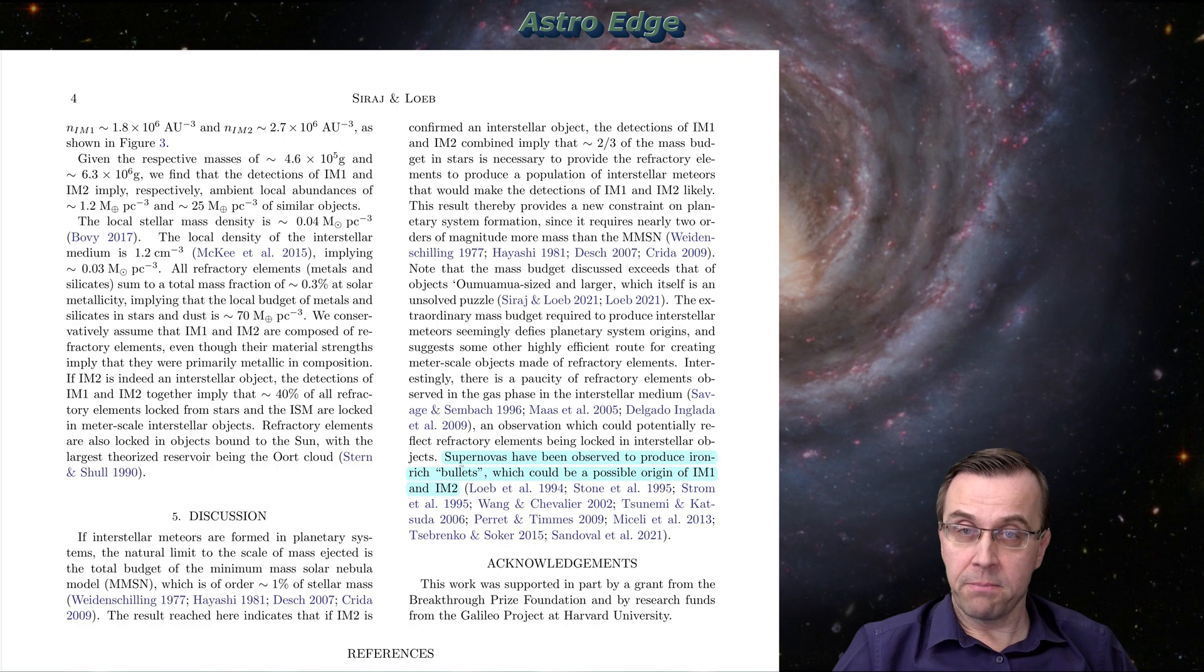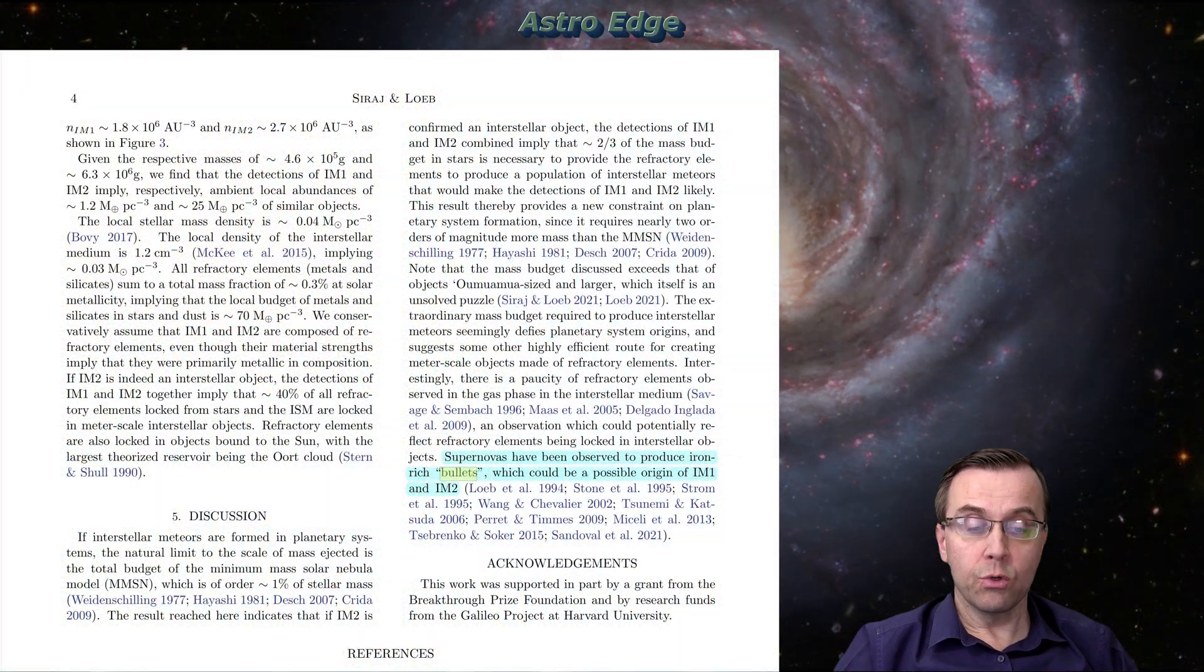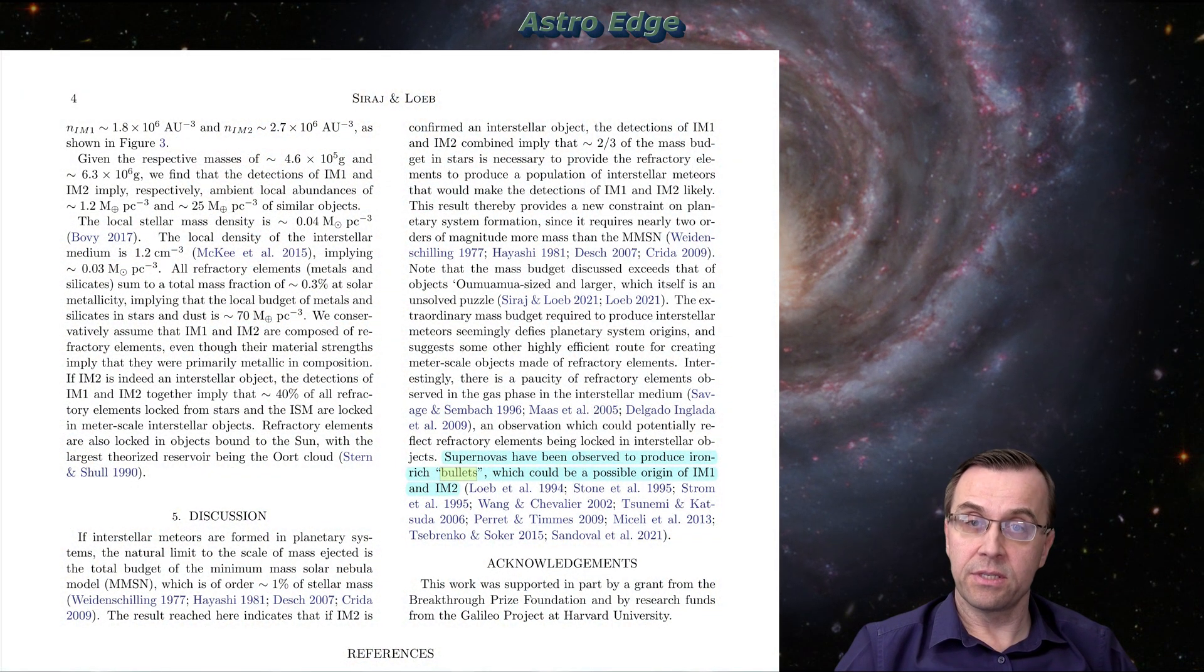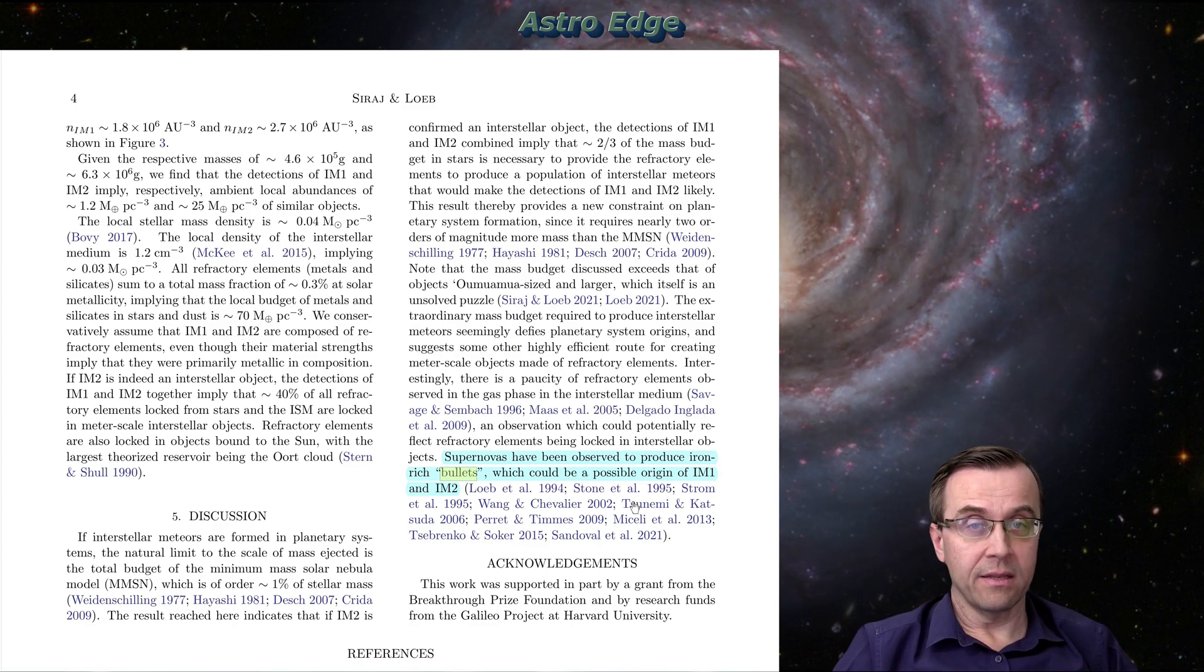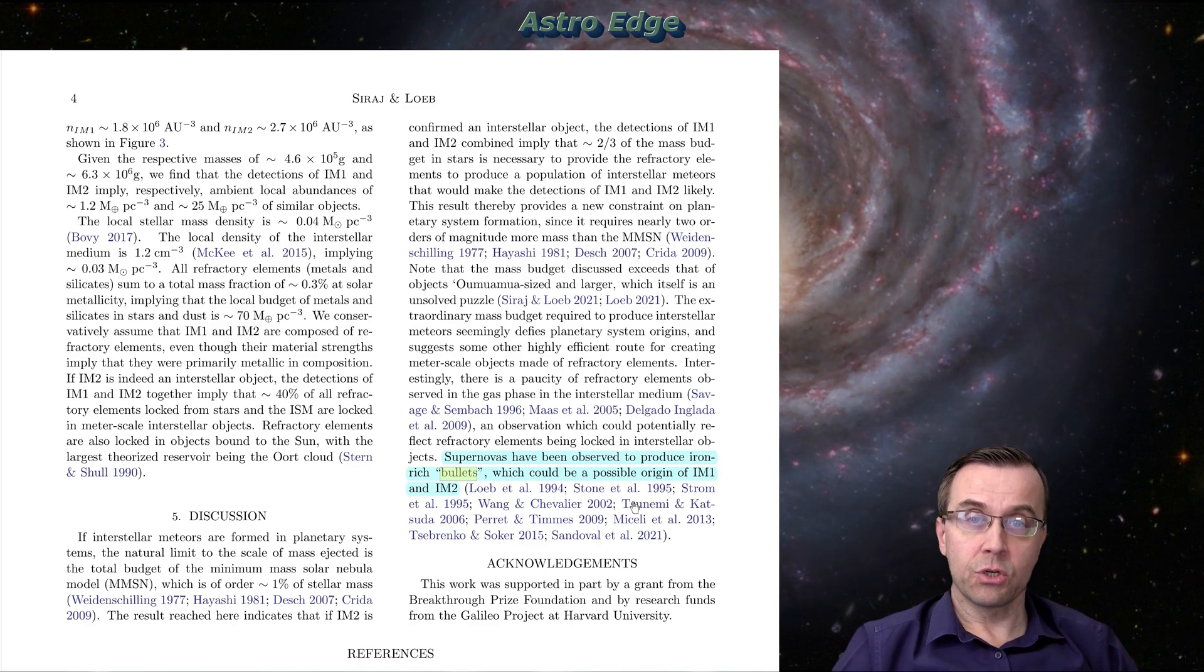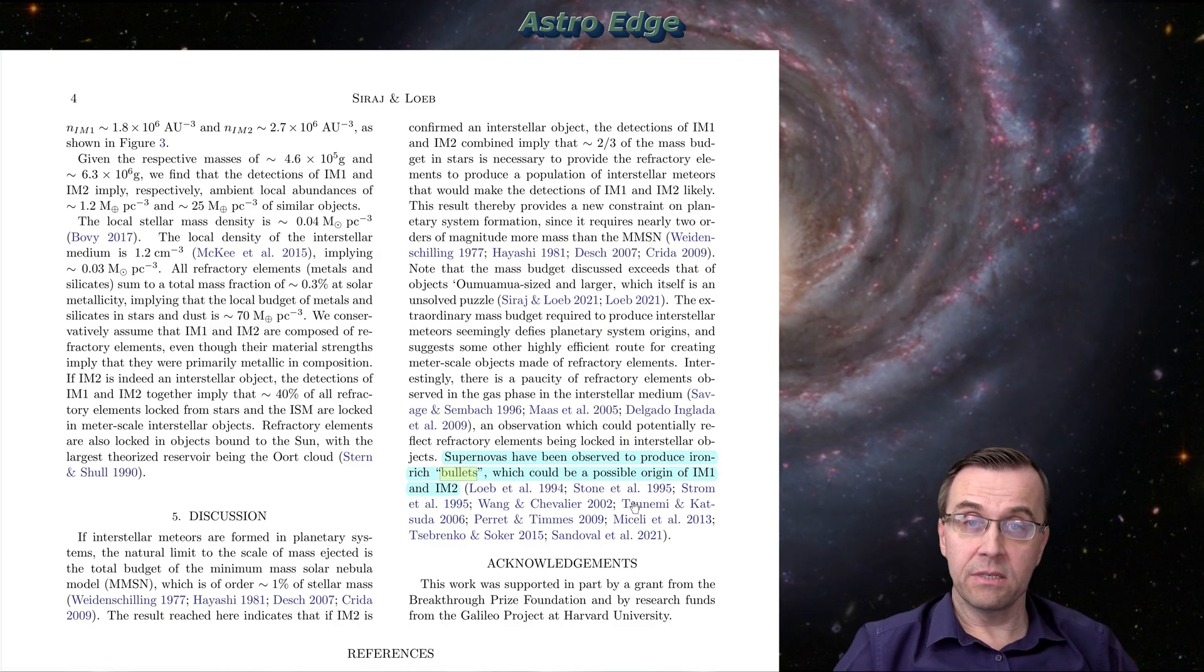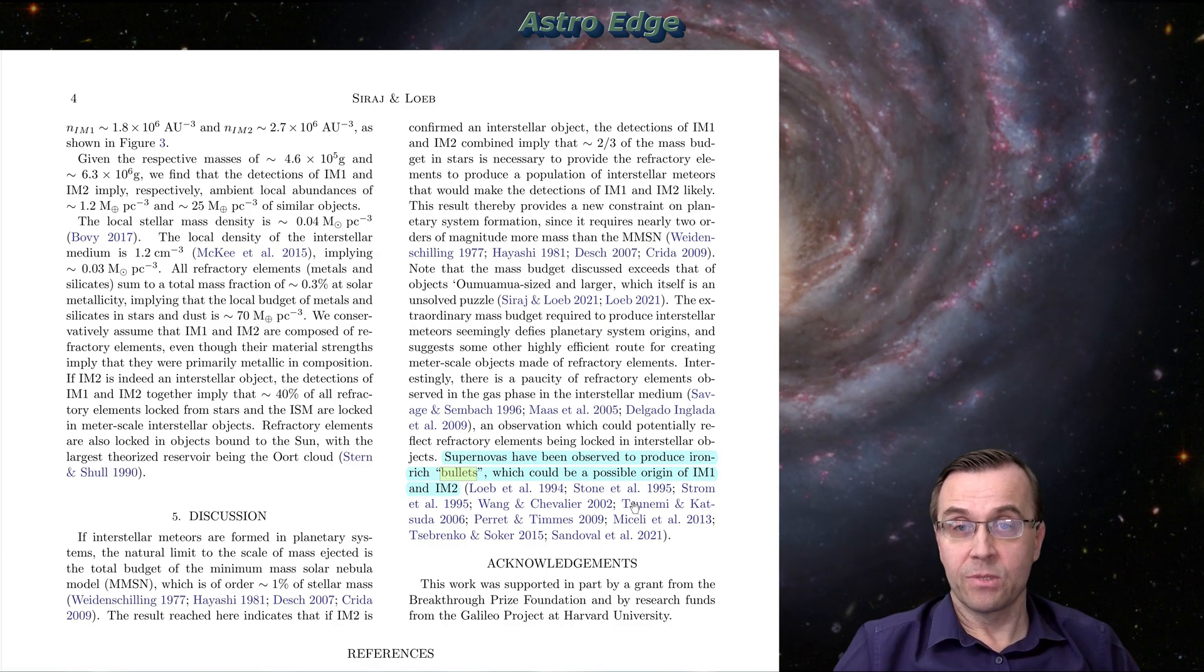In one of the earlier papers, the same researchers suggested that supernovas, these are dying stars exploding at the end of their lifetime, perhaps can produce iron-rich bolides, which could be a possible origin of this interstellar meteor. Even more exciting, but I would say very unlikely possibility for this extraordinary strength of this material, that perhaps this is not a natural object. Who knows?